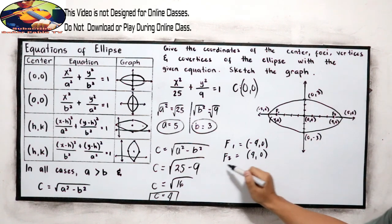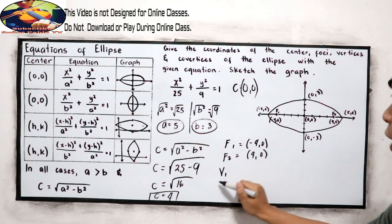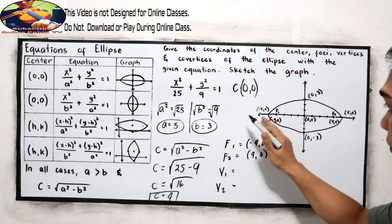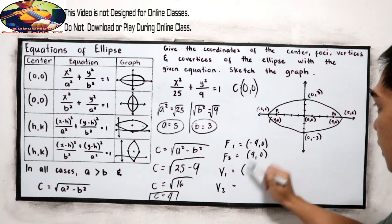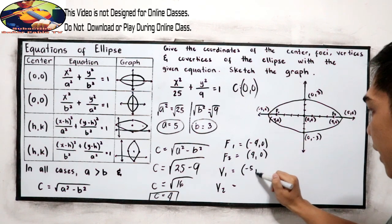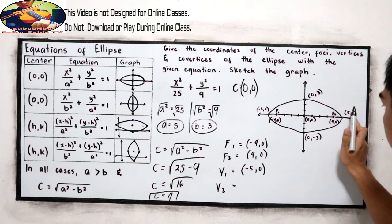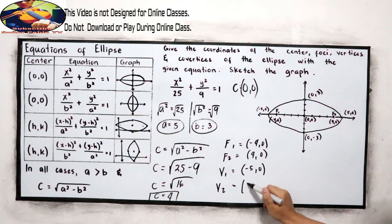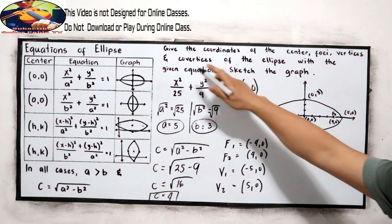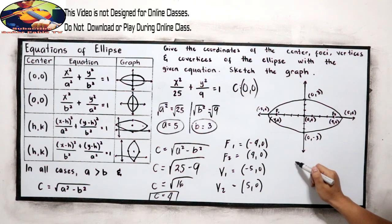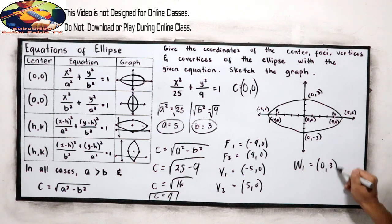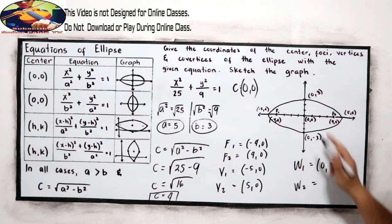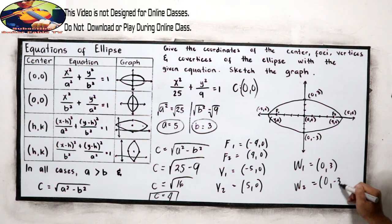To finalize our answer: F sub 1 is (-4, 0), F sub 2 is (4, 0). The vertices are V1 = (-5, 0) and V2 = (5, 0). The co-vertices are W sub 1 = (0, 3) and W sub 2 = (0, -3).